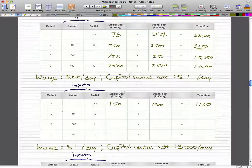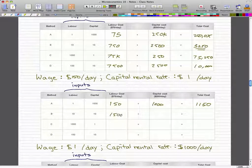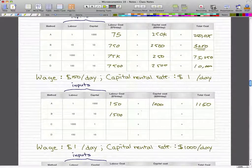For B, we have $10 times $150 will give us $1,500. And $1 times $10, which gives us $10. So that'll give us $1,510.